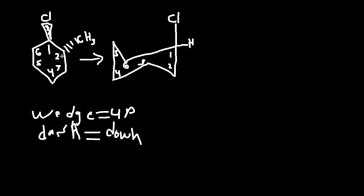Next, on number 2, we have the dash. Dash means down. And over here on the structure, number 2 is down. So down and down — same side — that'll be the axial side. So CH3 goes on the axial side, and on the other side it would be the hydrogen. You can fill in hydrogens for positions 3, 4, 5, and 6, but that's not really important.